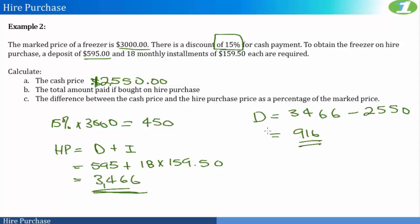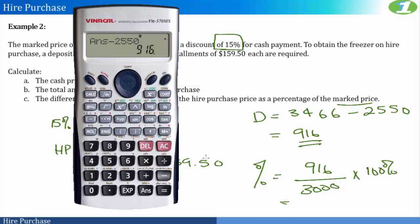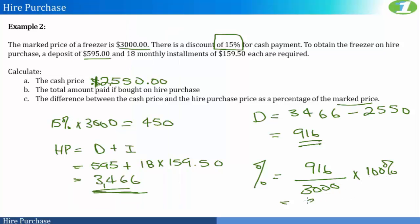Now given that this is our difference, to find this as a percentage of the marked price, all we do is divide by our marked price, which is $3,000, and times this by 100%. So this would actually be divided by $3,000, and this gives us 0.305. So this is actually 0.305, and times 100% will definitely give us 30.5%. So this is 30.5% of your marked price.